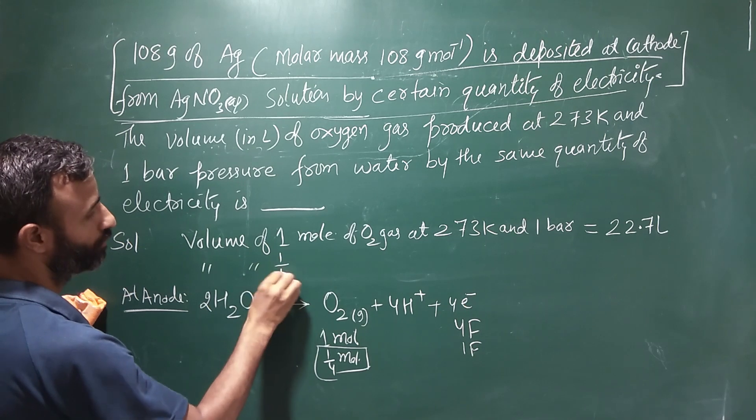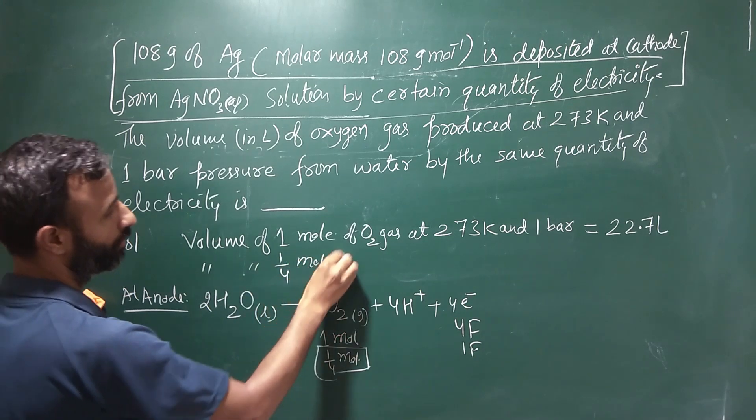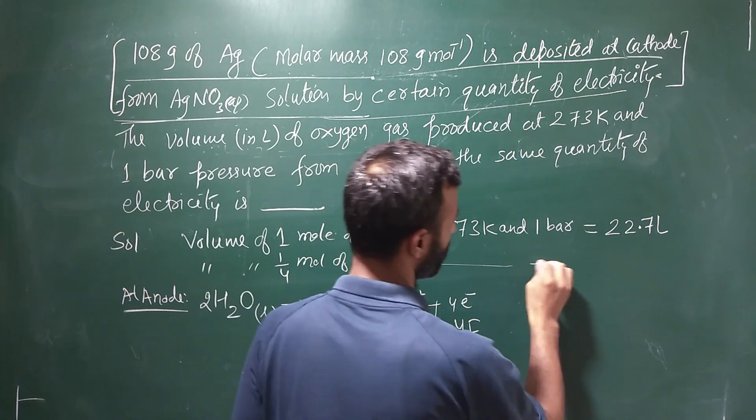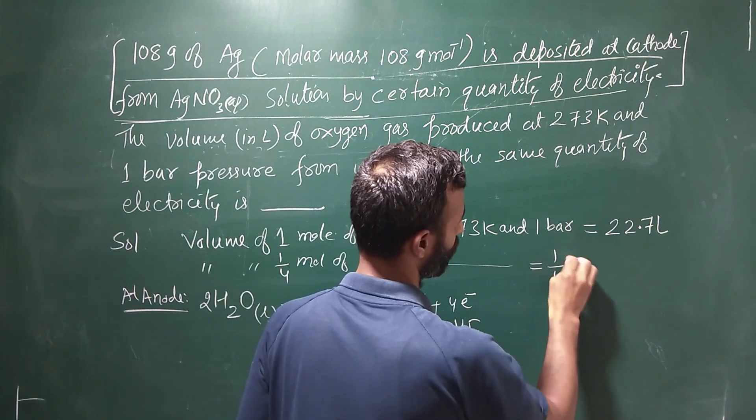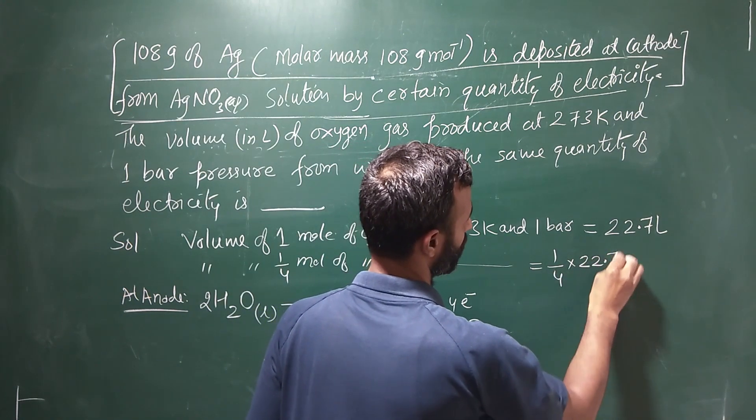Of 1 by 4 mole of O2, that is 1 by 4 of 22.7.